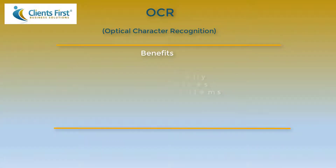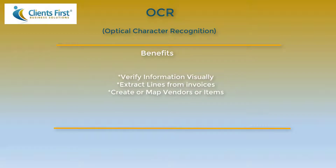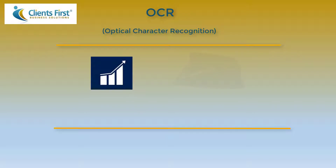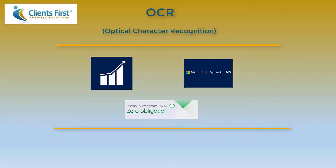There are three benefits of using this new feature in NAV 2017. First, you verify information visually — use the new visual HTML-based Lexmark ICS web page to verify invoices and train the system to recognize vendors or items. Second, you extract lines from invoices by training invoice layouts to extract invoice lines, which appear in a generated purchase invoice and save you time. Third, you can create or map vendors or items. Microsoft Dynamics NAV 2017 and Dynamics 365 for Financials are loaded with this invoice capture service.